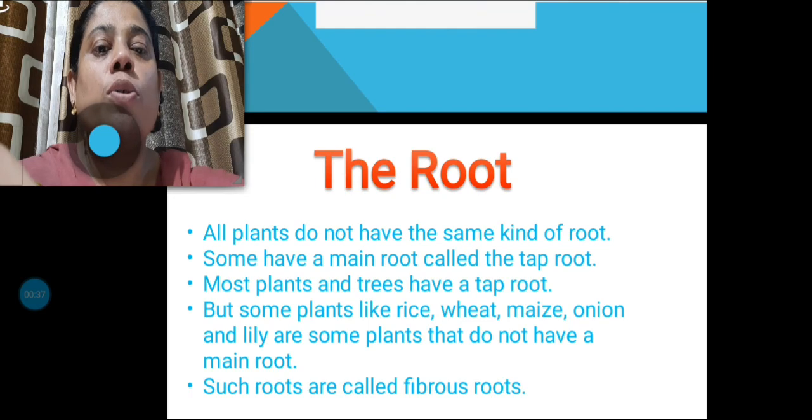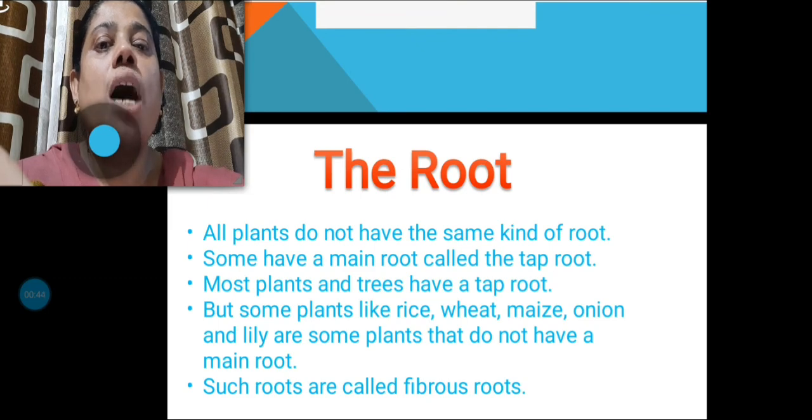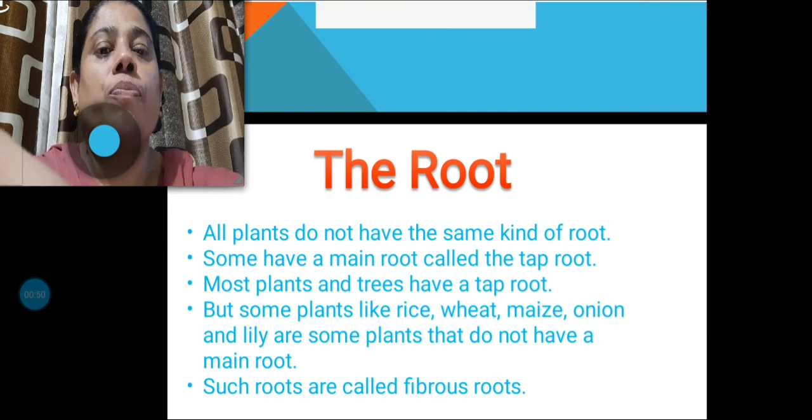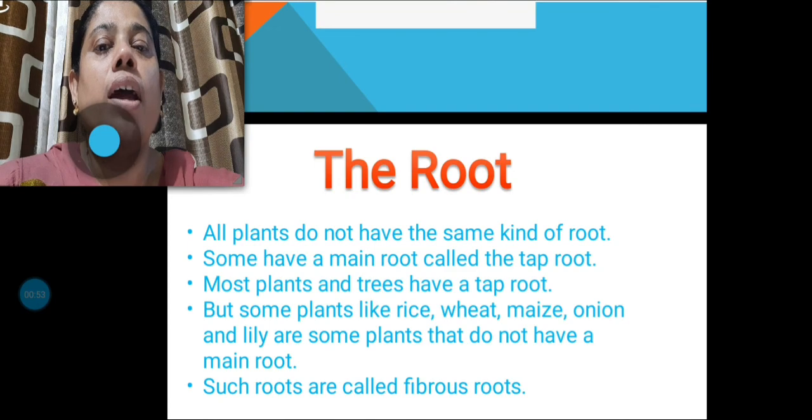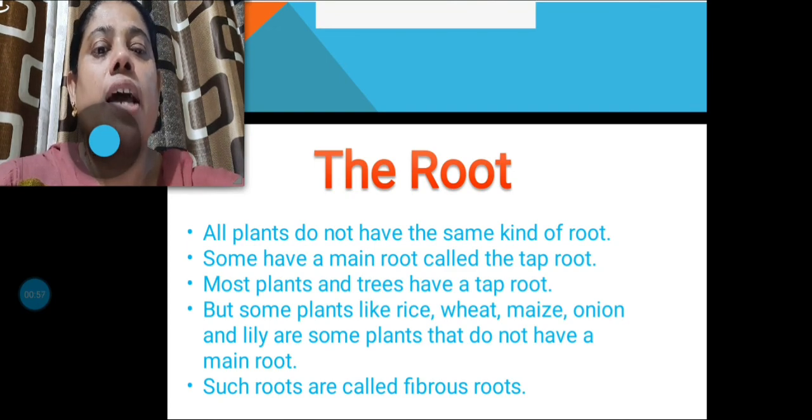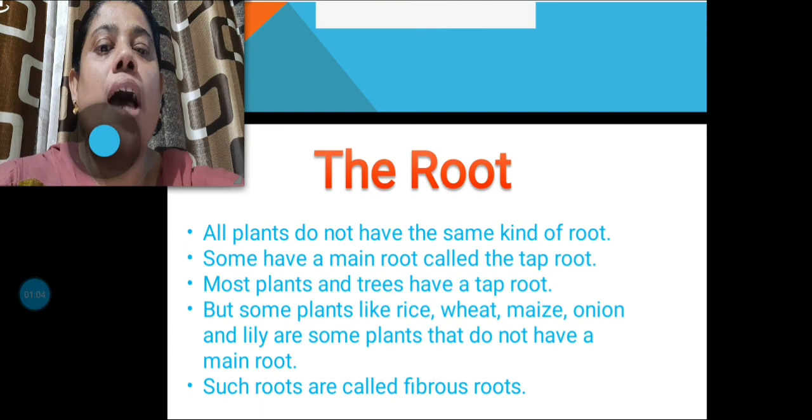All plants do not have the same kind of root. Some have a main root called the tap root. Most plants and trees have a tap root. But some plants like rice, wheat, maize, onion and lily are some plants that do not have a main root. Such roots are called fibrous root.